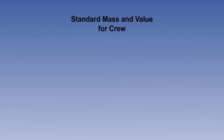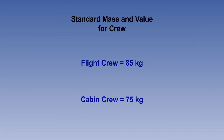Let us look at the requirements for crew and their baggage. The operator, when determining the dry operating mass, must use either the actual weighed masses or standard masses of 85 kg for flight crew and 75 kg for cabin crew and their hand baggage. Any additional baggage must be accounted for.